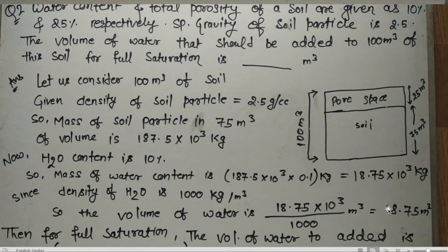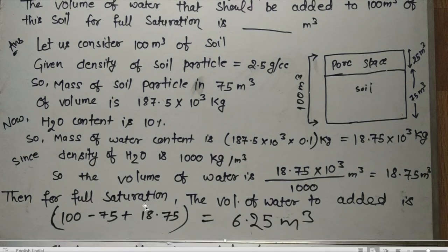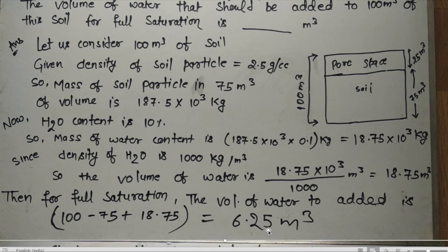For full saturation, we need to fill all 25 meter cube of pore space. The volume of water to be added equals the pore volume minus existing water volume: 25 − 18.75 = 6.25 meter cube. So 6.25 meter cube of water needs to be added for full saturation.